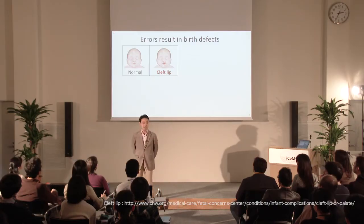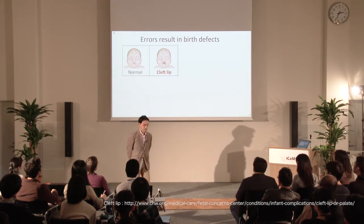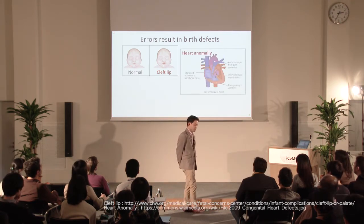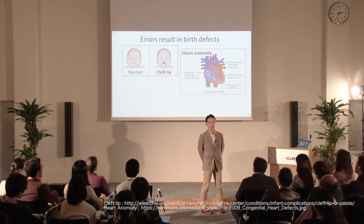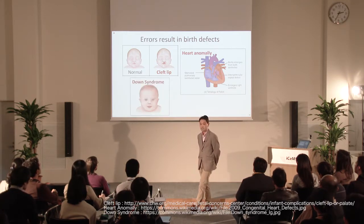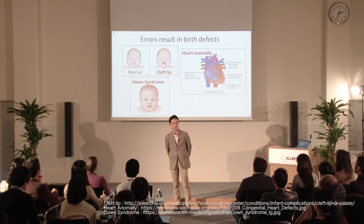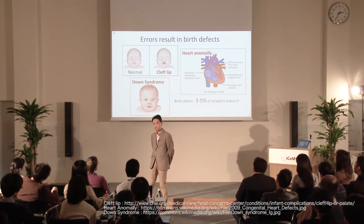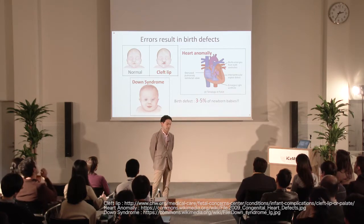Isn't it amazing that this complex process occurs without mistakes? Actually, we do sometimes make mistakes, and these mistakes cause birth defects. The major known birth defects include cleft lip or cleft palate, which is a defect in fusion of the facial structure at the midline; heart anomaly, which is a defect in the formation of cardiac chambers or tube connections; and Down syndrome, caused by having abnormal chromosome numbers. These birth defects are seen in around 3–5% of all newborn babies, which is quite a lot.